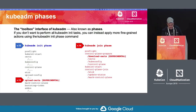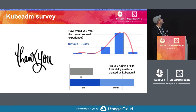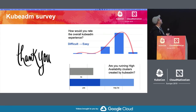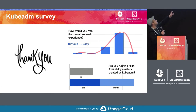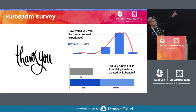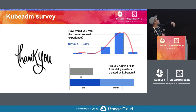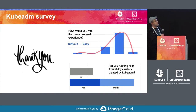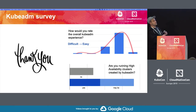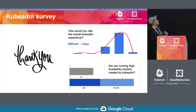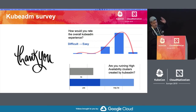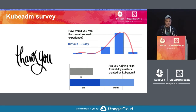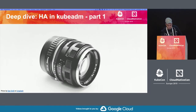We did a survey - for those who participated, thank you. The overall UX question got an average score of four out of five, which is pretty good. The most desired feature people responded with was high availability clusters, and the past couple of cycles we've been focusing on that pretty much. Fabrizio is going to take over to talk about HA.